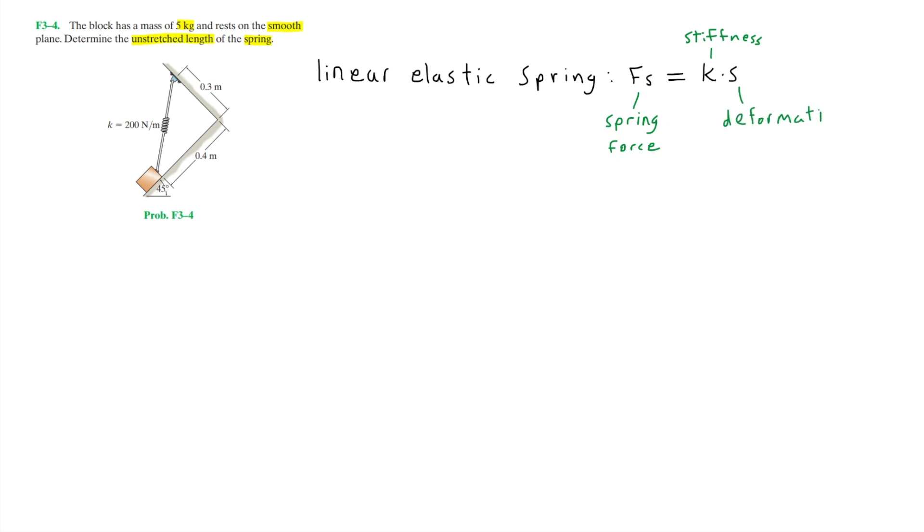Knowing this equation alone, and of course a little bit of statics, you'll be able to easily tackle this problem. Since S is deformation, S will simply be equal to the stretched length of the spring minus the unstretched or original length of the spring. So here L is the stretched length and L0 is the unstretched length. In this problem, we are asked to find the unstretched length. So we're looking for L0.